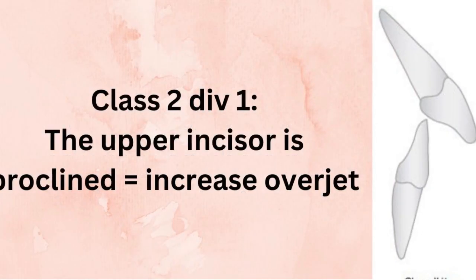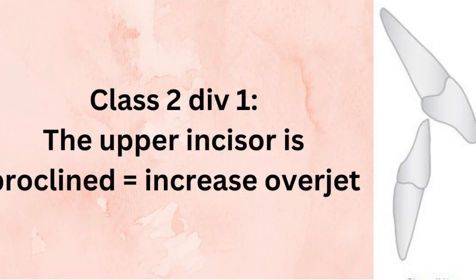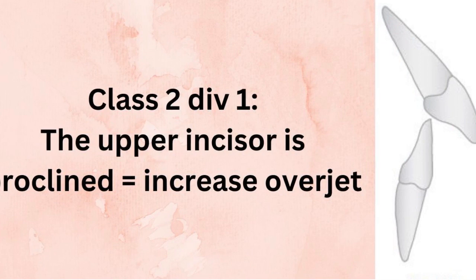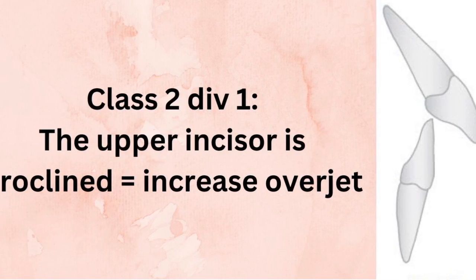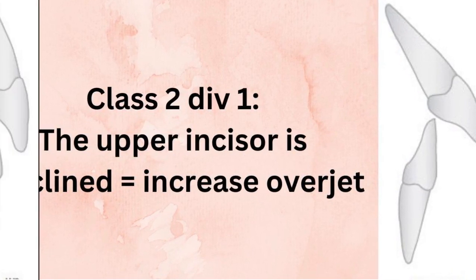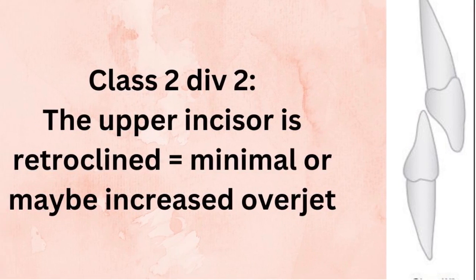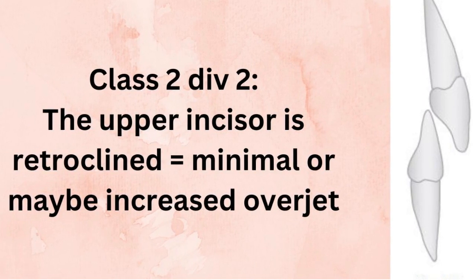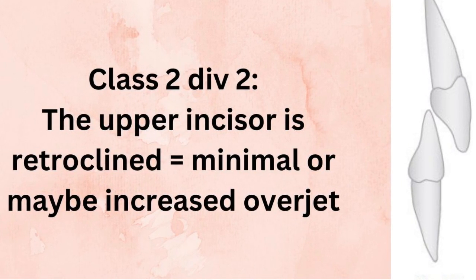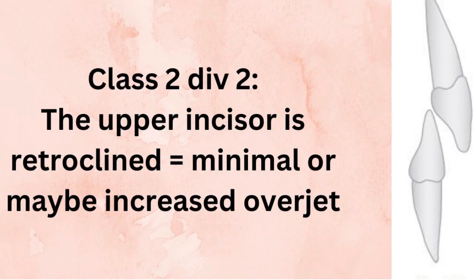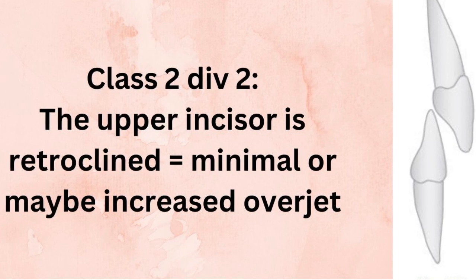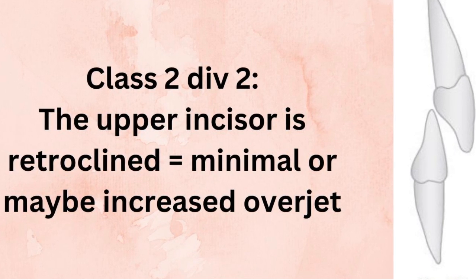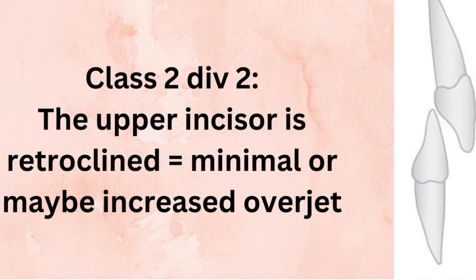For class 2, we have division 1 and division 2. In division 1, the upper incisor is proclined, equal to increased overjet, as you can see. In class 2, division 2, the upper incisor is retroclined — so the opposite. There is a minimal or maybe an increased overjet.